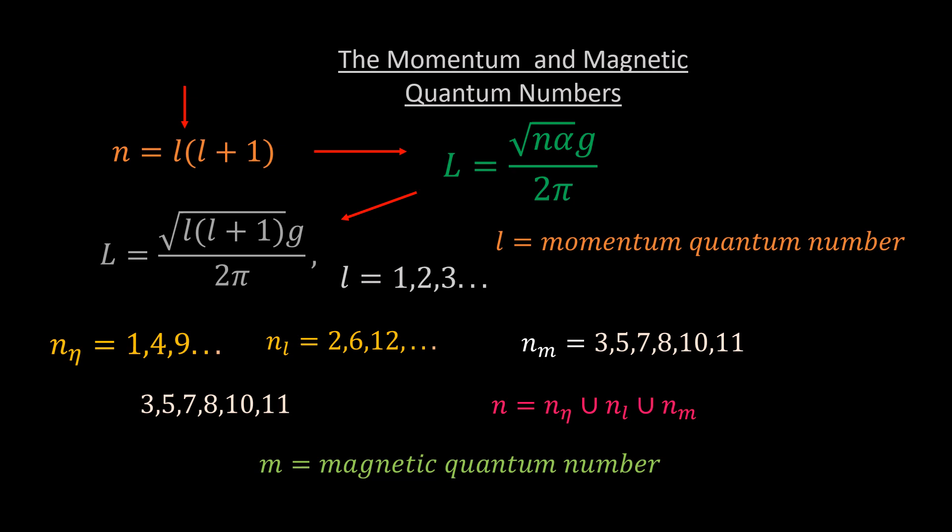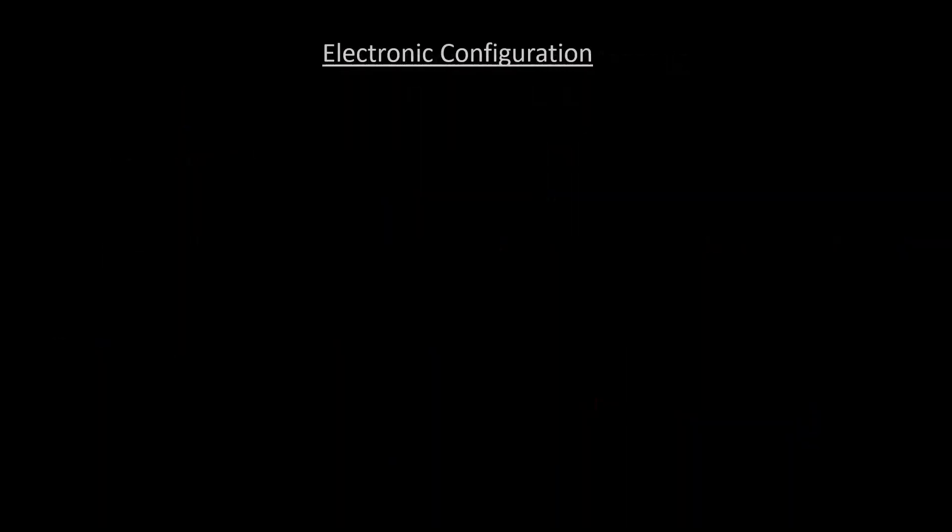So its momentum equation is given by the following blue expression. n can therefore be written as follows. The dots represent the nm's. The numbers are in the order n eta, nm, then nl, after which it starts again from n eta and repeat. That is, the values of n are in an oscillation between these three.